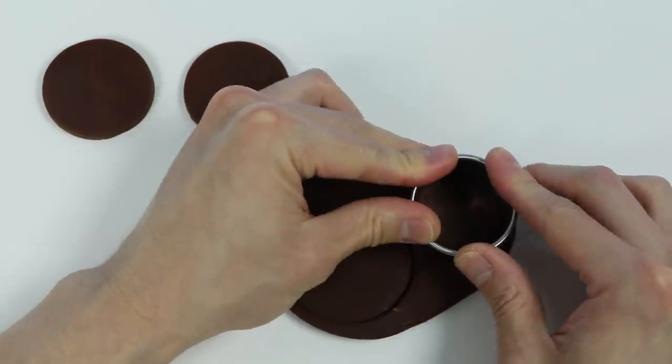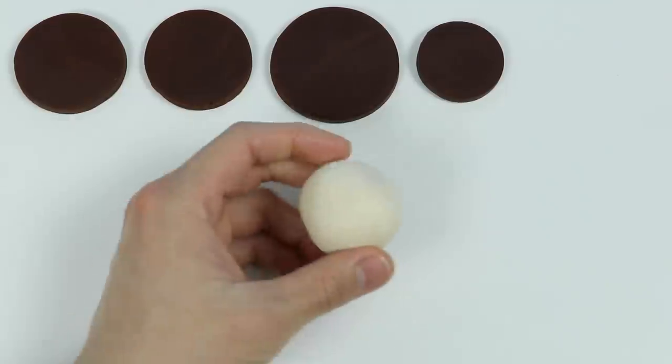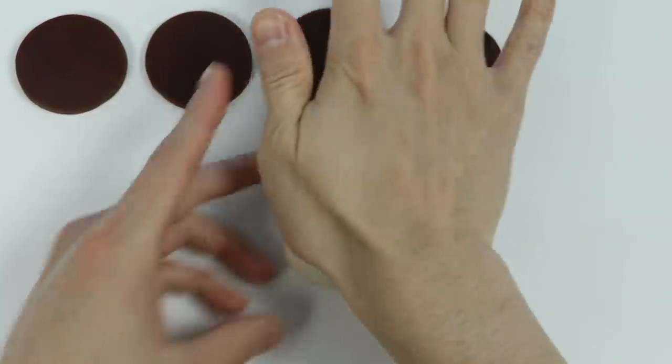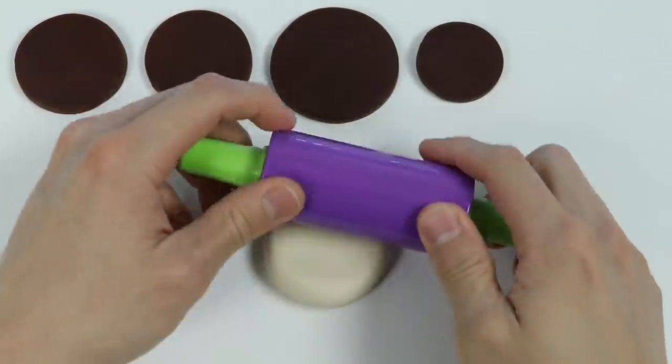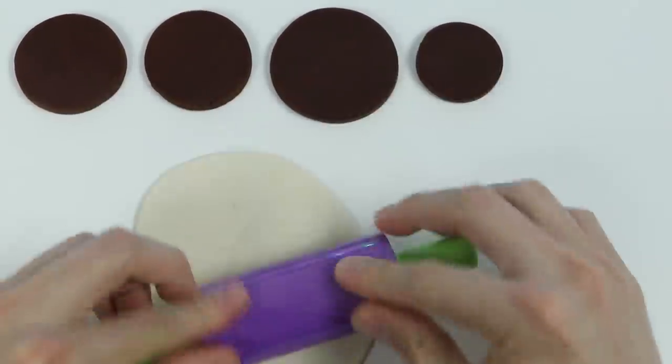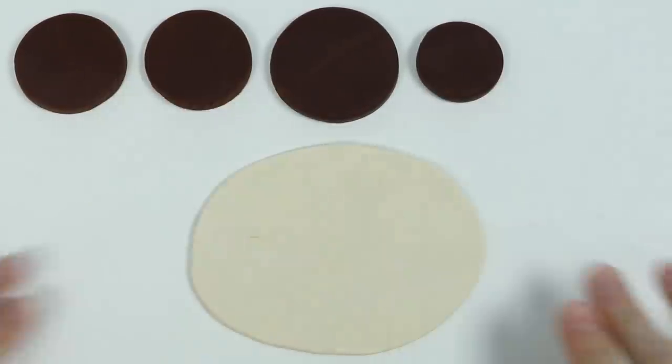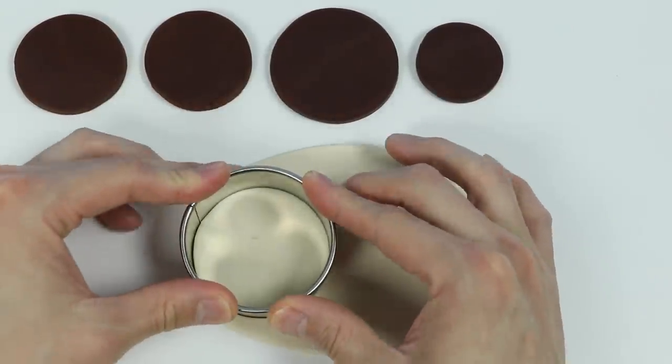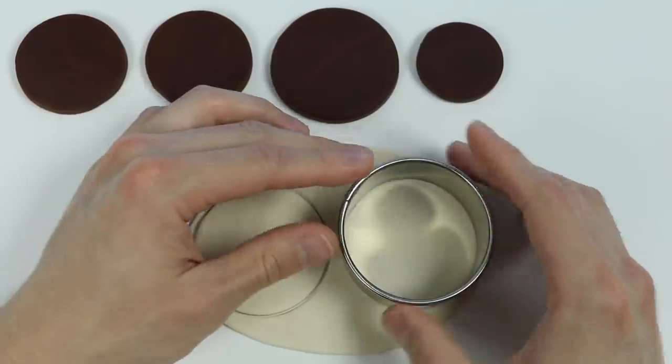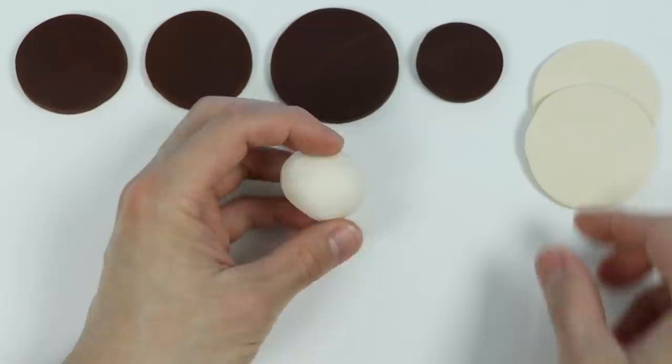Perfect. Now let's make some vanilla cake layers. Roll this out, make two large ones. Okay, now let's make a smaller cake layer.